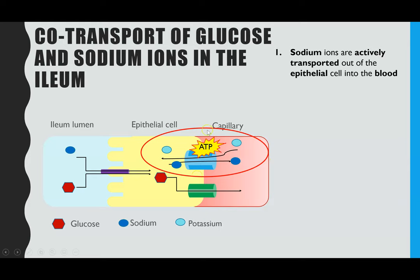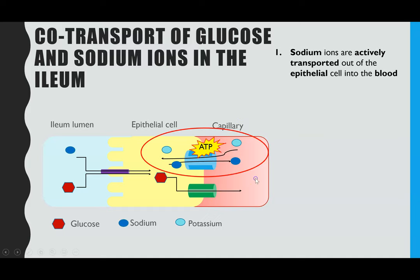In step one — the blue section represents the lumen of the ileum, the inside of the tube which is your small intestines. Then we have the epithelial cell, the layer of cells lining the walls of the intestines. And then there's the capillary, which lies right next to the epithelial cells and contains the blood. Step one: there is a carrier protein enabling sodium ions — shown in dark blue — to be actively transported from the epithelial cell into the blood within the capillary.